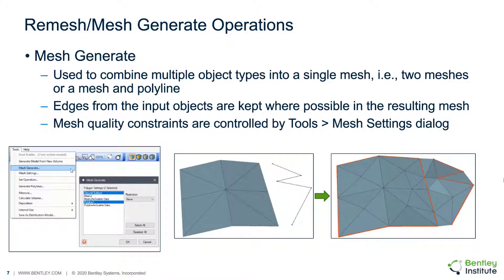The software also contains a mesh generate function which can be used to combine multiple objects into a single mesh. An example of this might be to combine a mesh and a polyline into a single mesh. It is possible that an existing partial mesh is available and there are non-surface elevations at a different location. The mesh generate function may be used to combine the two objects into a single well-defined mesh. It should be noted that the edges from the input objects are kept where possible in the resulting mesh, and the quality of the mesh constraints are controlled by the Tools > Mesh Settings dialog.